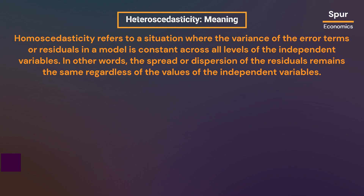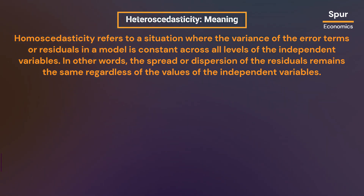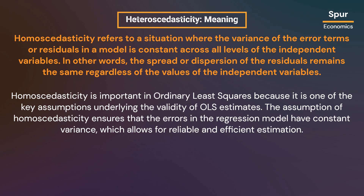Homoscedasticity refers to a situation where the variance of the error terms or residuals in a model is constant across all levels of the independent variables. In other words, the spread or dispersion of the residuals remains the same regardless of the values of the independent variables. Homoscedasticity is important in ordinary least squares because it is one of the key assumptions underlying the validity of OLS estimates.